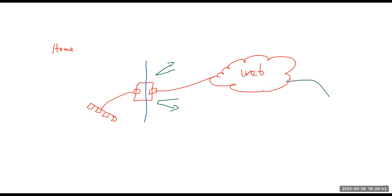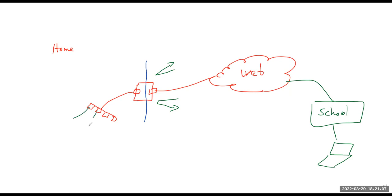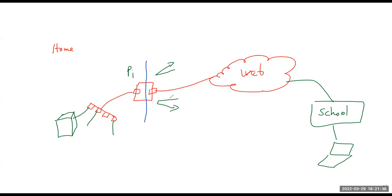Let's say you're at school, connected with a laptop, and at home you have all your devices and computers — in particular, a server. This is what you have to recreate in the lab. The server will have an IP address on your internal network. The Raspberry Pi acts as the gateway between the internal network and the outside network.